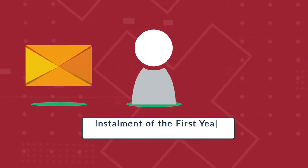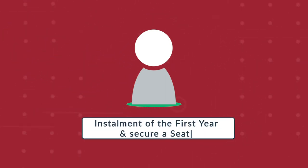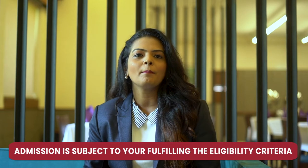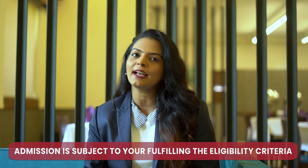Step 3. You will receive a second email asking you to pay the instalment of the first year tuition fees and partially secure a seat in the course of your choice. This partial allotment will be subject to you satisfying the eligibility criteria laid down by the respective council and governing authorities.